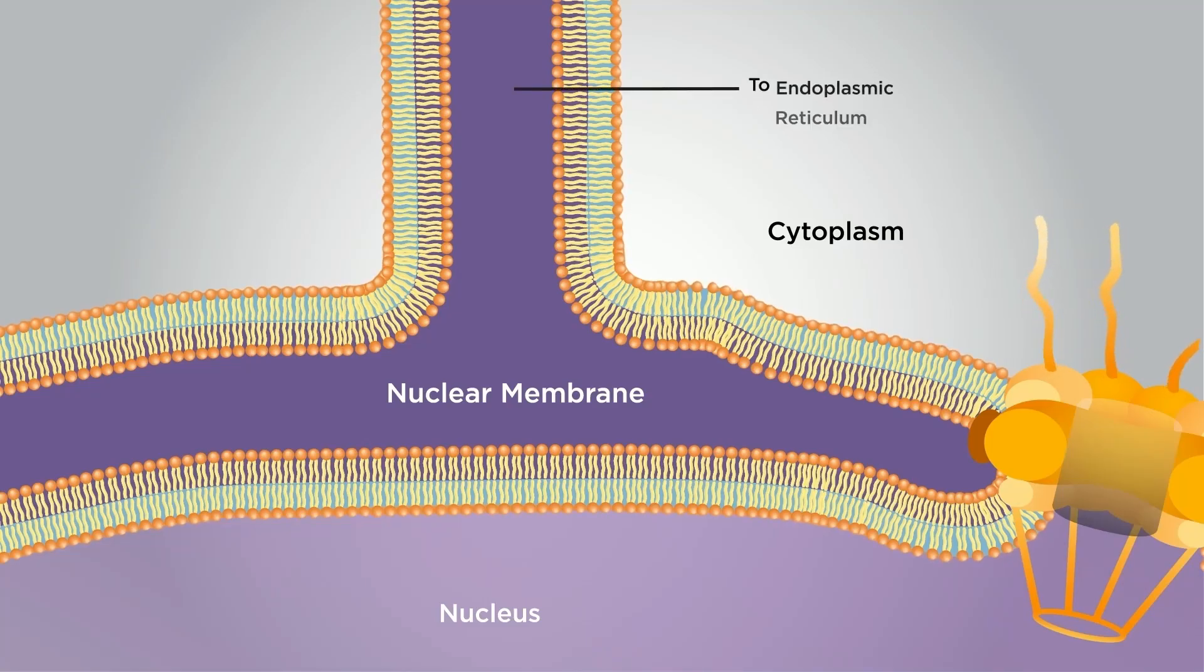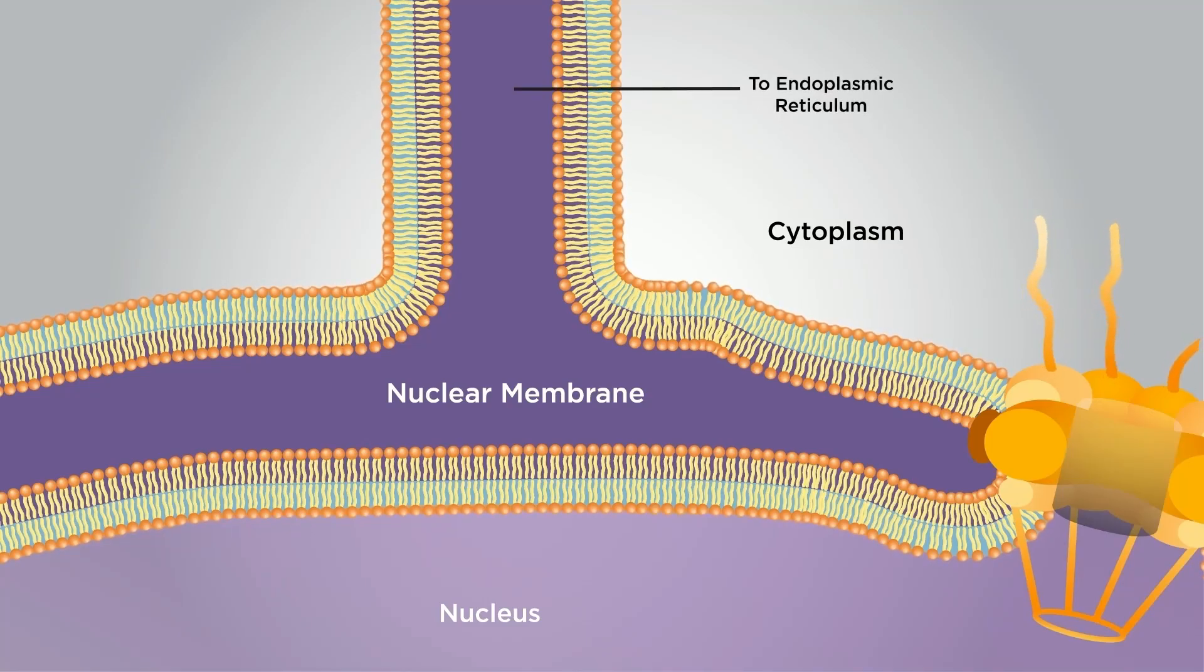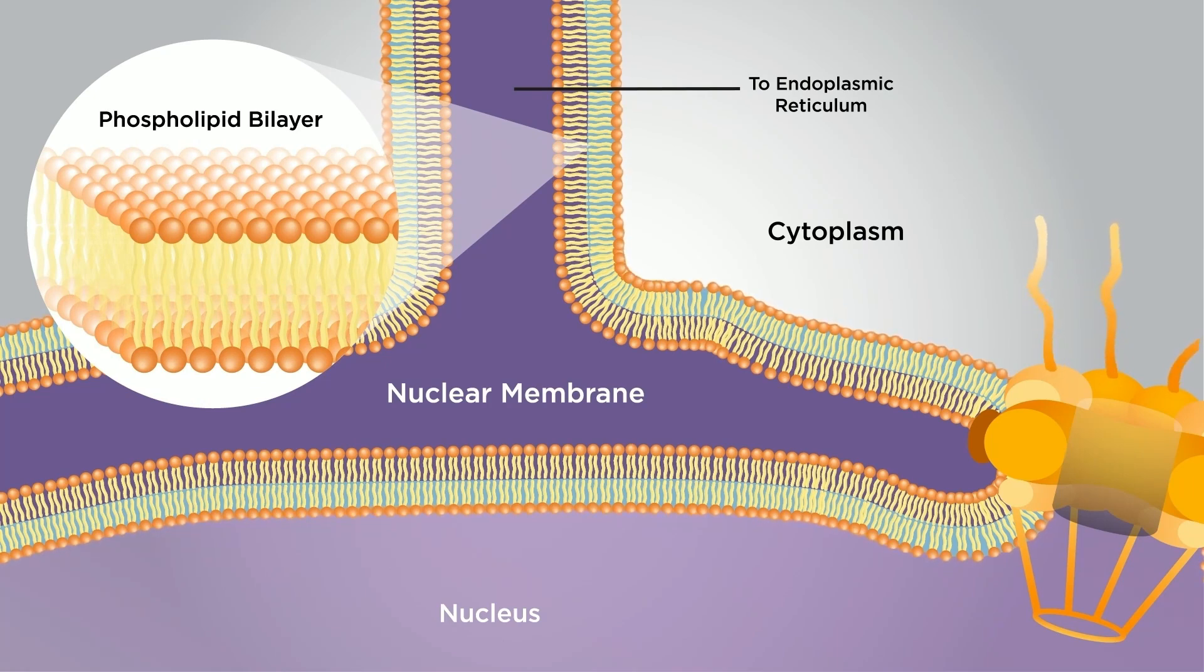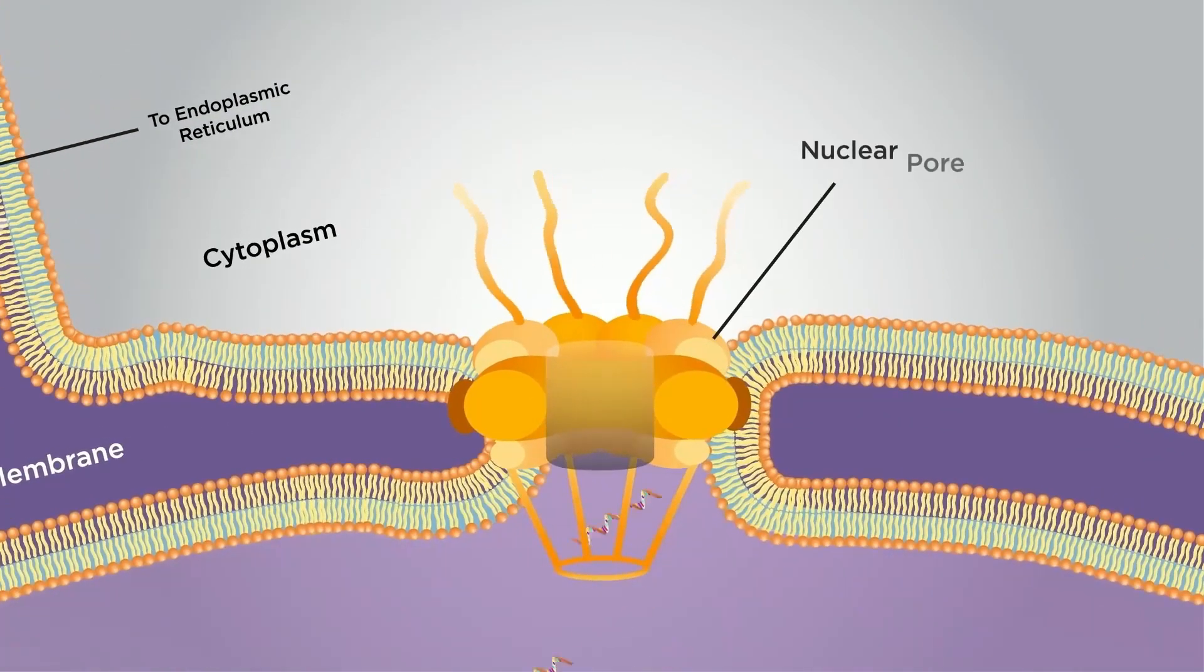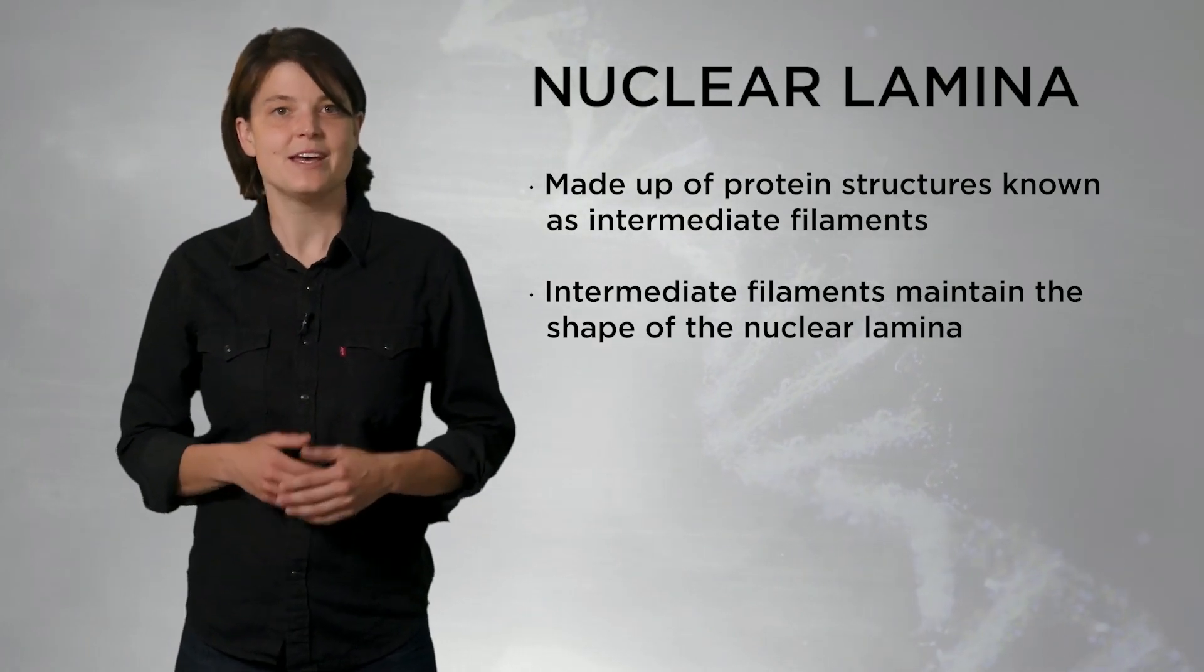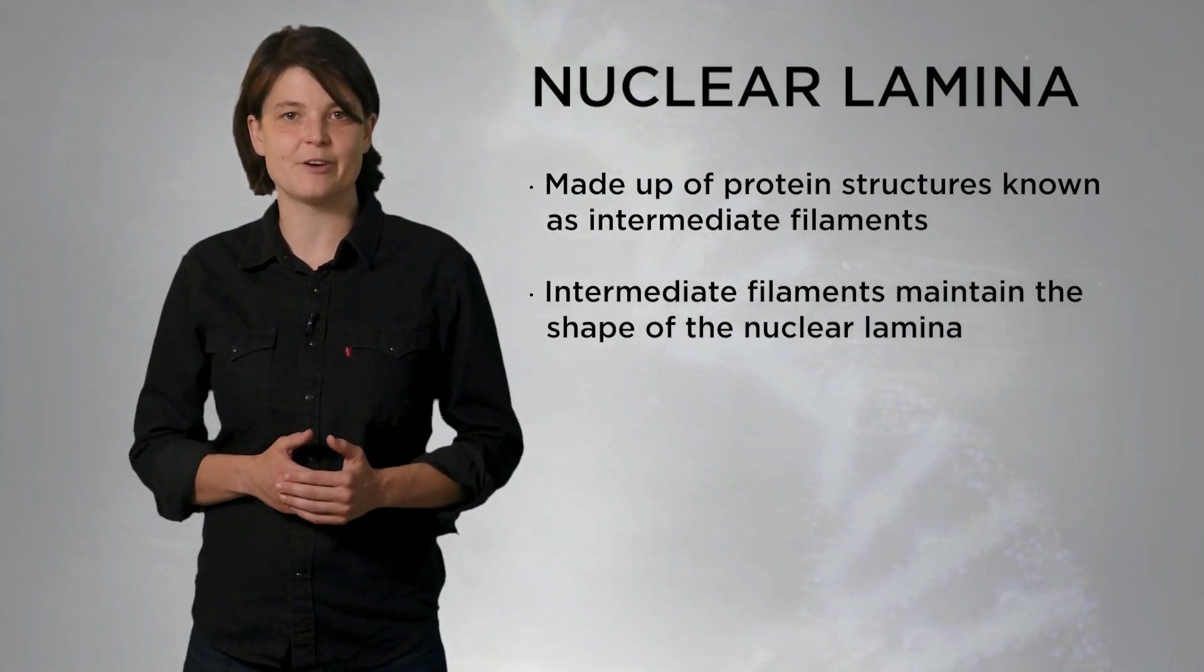The nuclear envelope consists of a double membrane, each made up of a lipid bilayer. Within this lipid bilayer, the nuclear envelope contains pore complexes that regulate the travel of proteins and RNA in and out of the nucleus. The shape of the nuclear envelope is maintained by a structural component called the nuclear lamina. The nuclear lamina is made up of protein structures known as intermediate filaments that form a web on the inside of the envelope.